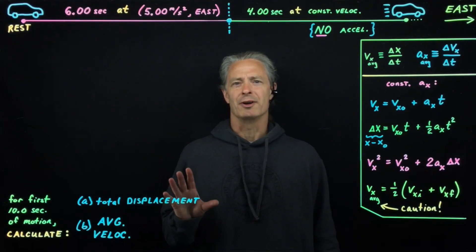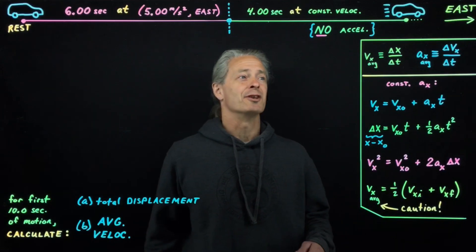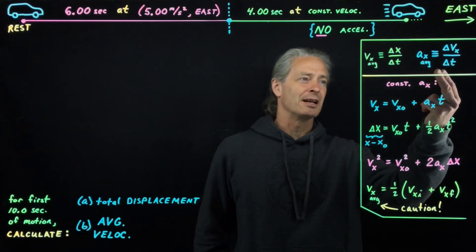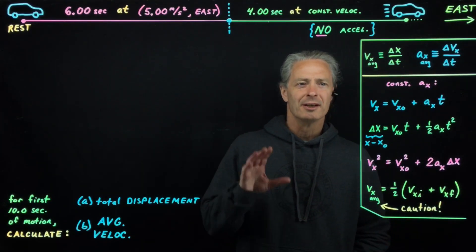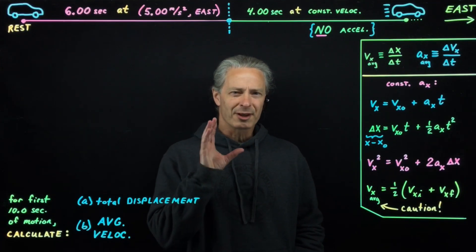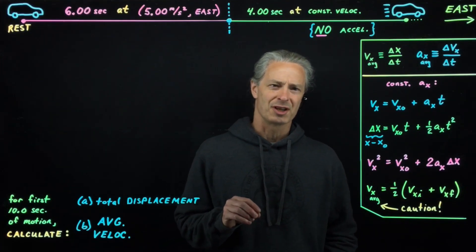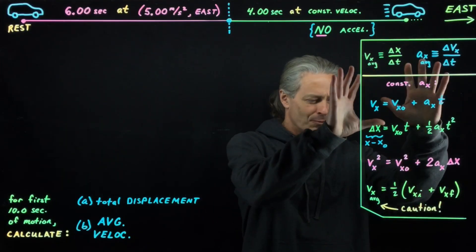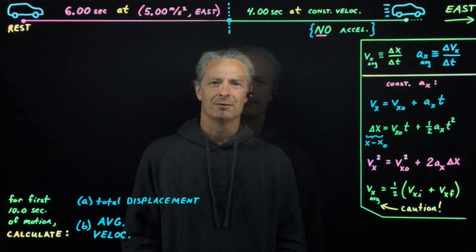Before we start, I want to remind us of our one-dimensional definitions for average velocity and average acceleration, respectively. And I also want to remind us that for each one-dimensional motion segment with constant acceleration, we have these equations at our disposal.